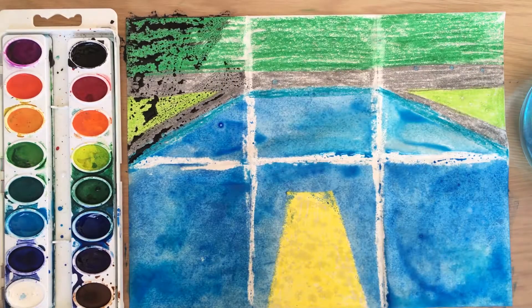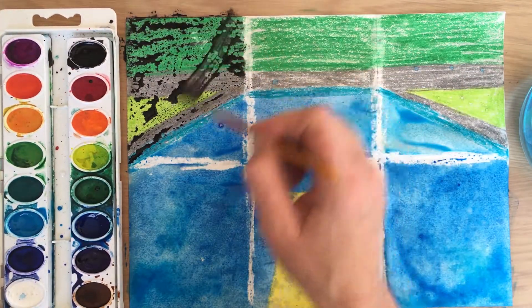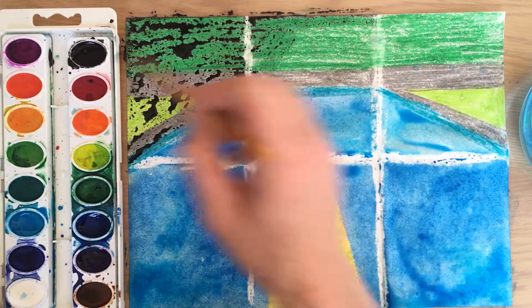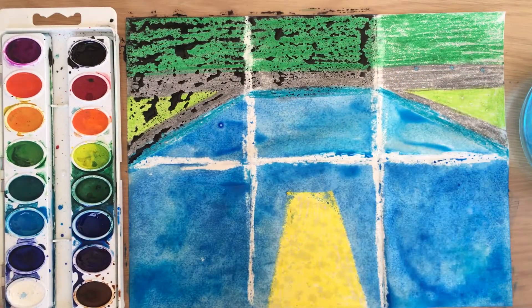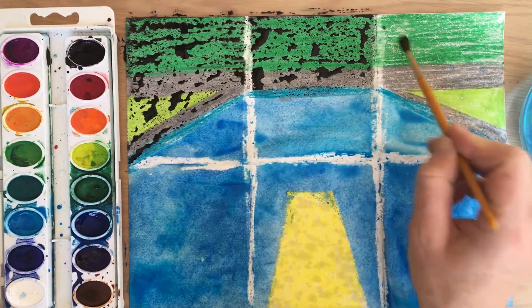Now it will kind of look like it's just sitting on your paper and that's what we're looking for because the paint will go in between the crayon where the paper still shows through.